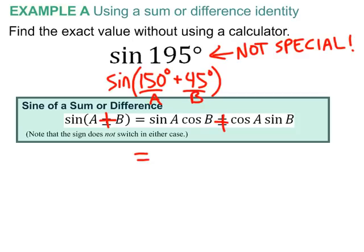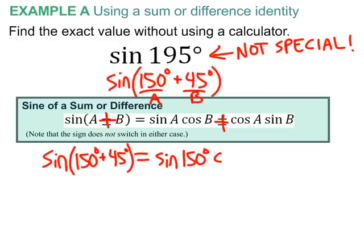sine, I'll just rewrite it here. 150 degrees plus 45 degrees equals sine of 150 degrees, cosine of 45 degrees, plus cosine of 150 degrees, sine of 45 degrees. And this is where you can tell that being really comfortable with your unit circle is a necessity. Okay,